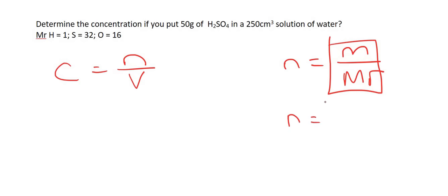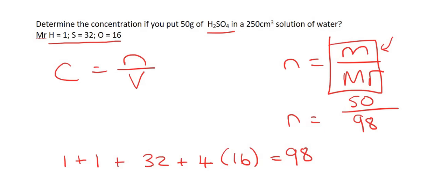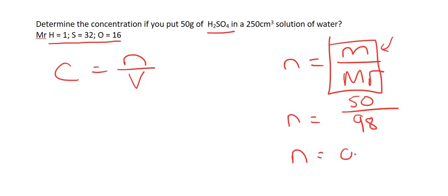I'll work out the moles separately. The mass is 50 over the molar mass of H₂SO₄. There are two hydrogens (1+1), one sulfur, and four oxygens. The values are from the periodic table. If you add that up, you get 98 as the Mr. Working out the moles gives 0.51 moles.